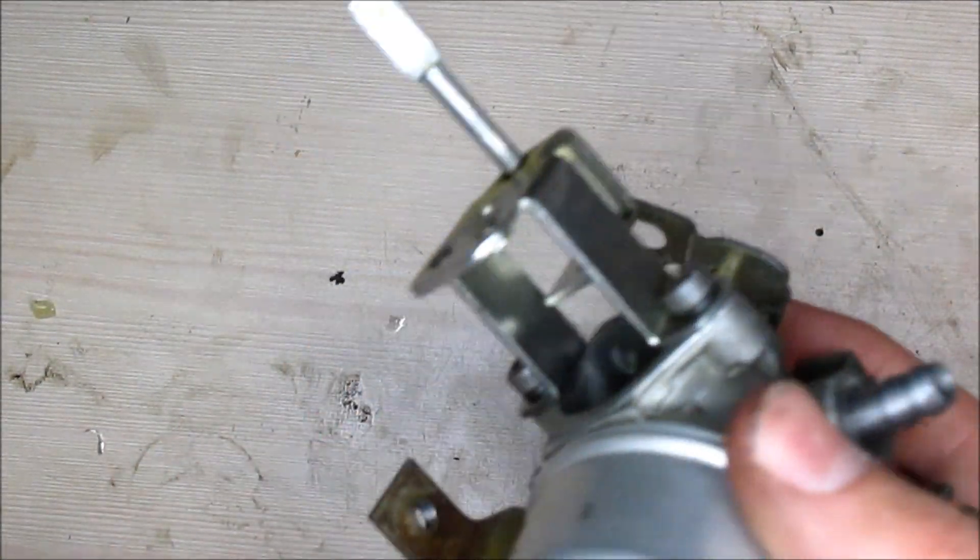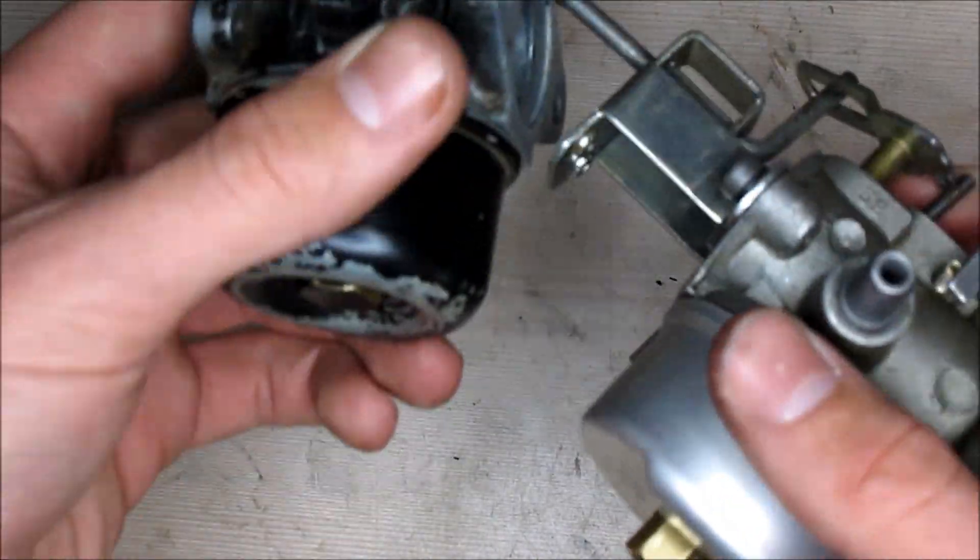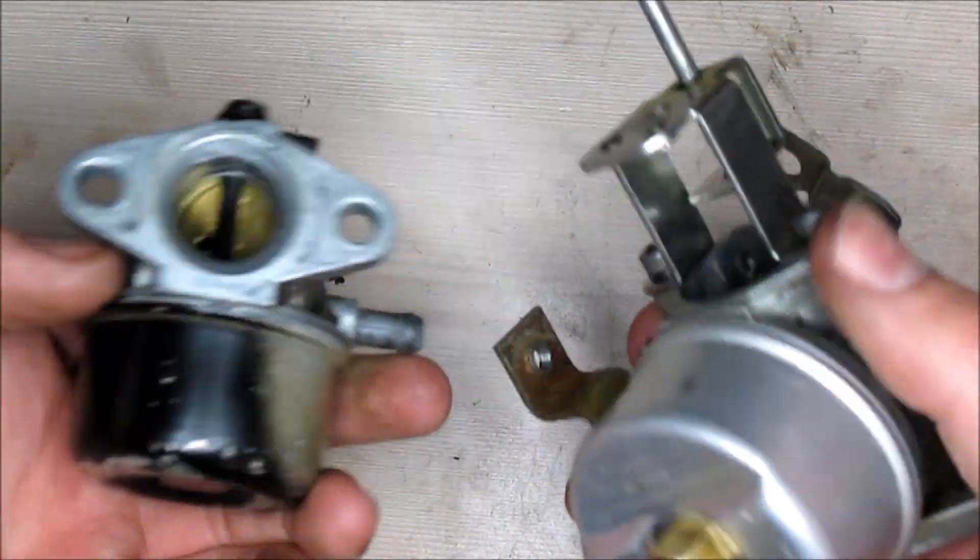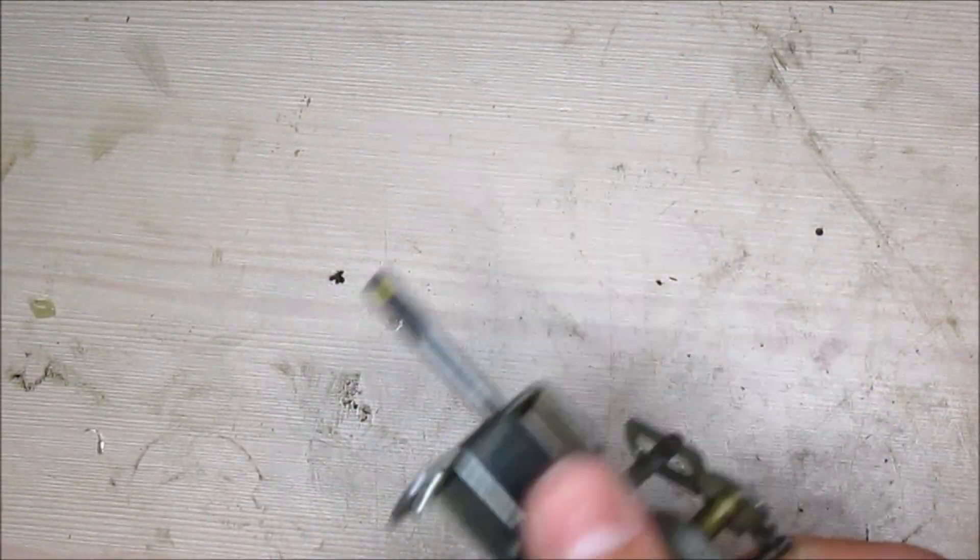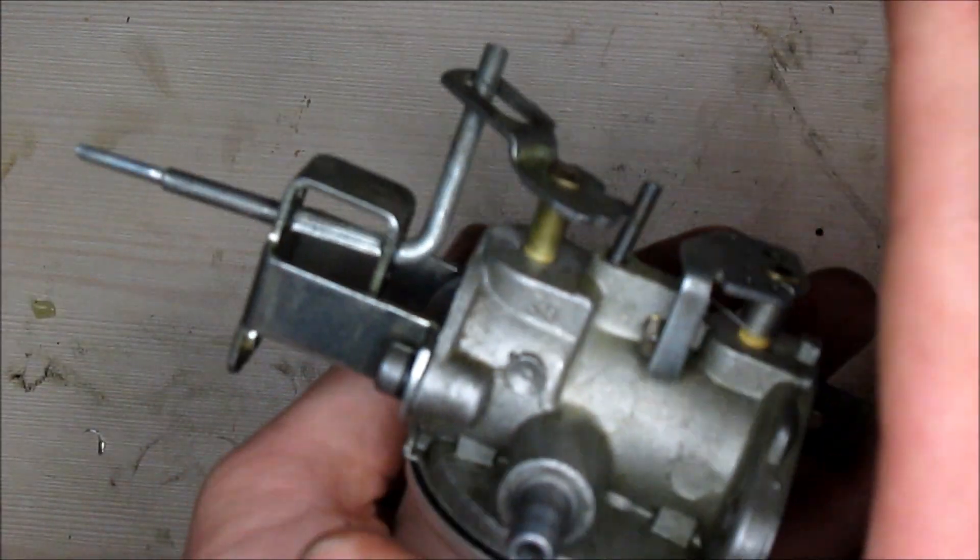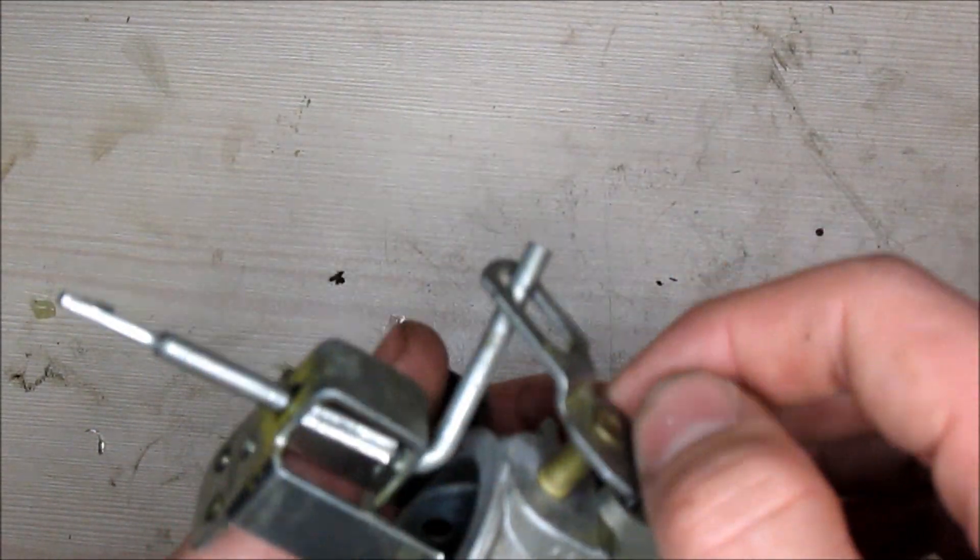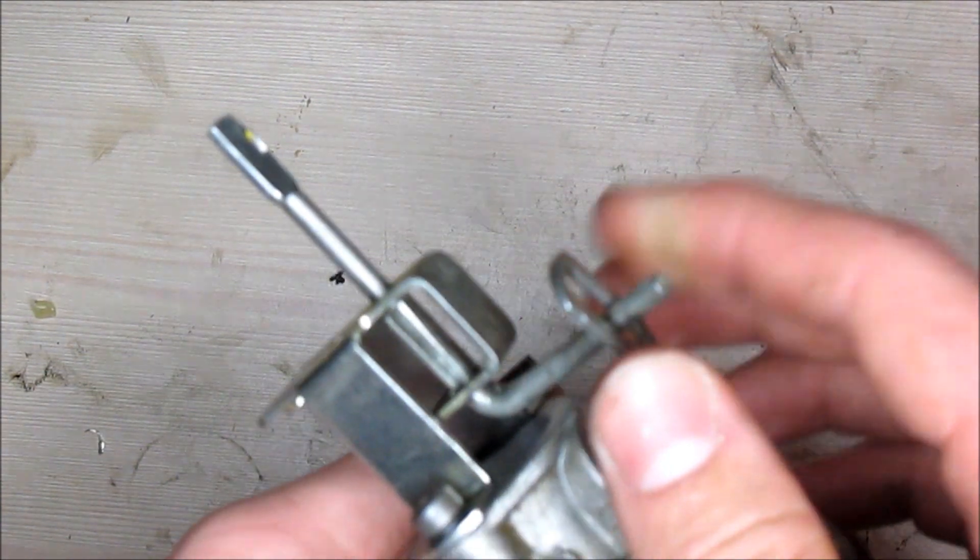Snowblower carburetors are slightly larger than your usual lawnmower carburetor and have just about the same parts. This particular carburetor came off of a Tecumseh 8.5 horsepower horizontal shaft engine from a snowblower.